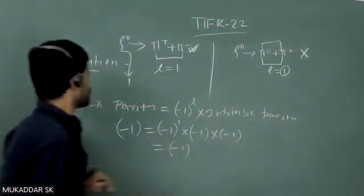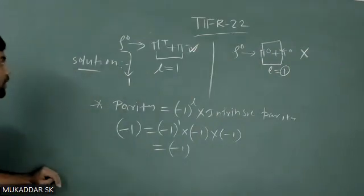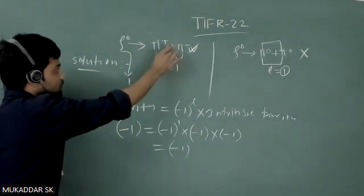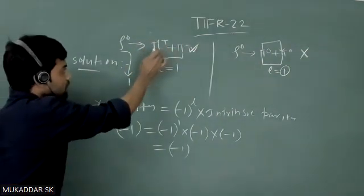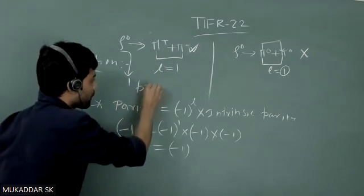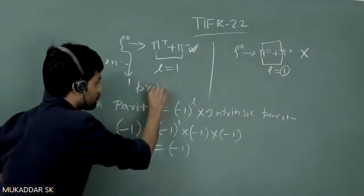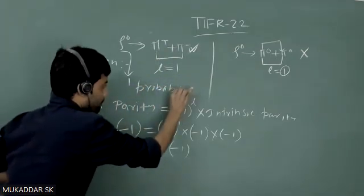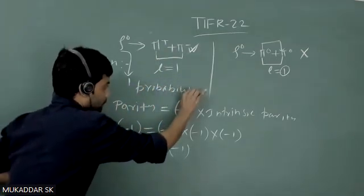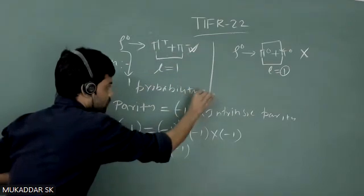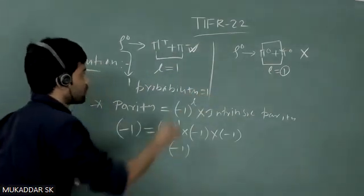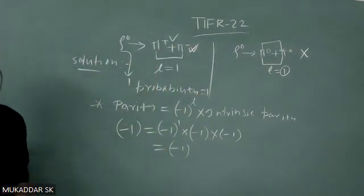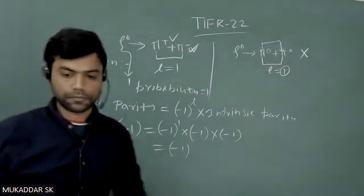So the probability of rho zero decaying to pi plus plus pi minus through this channel will be equal to one. Thank you.